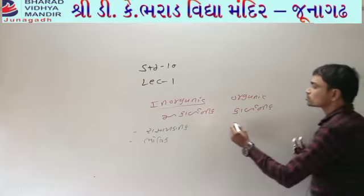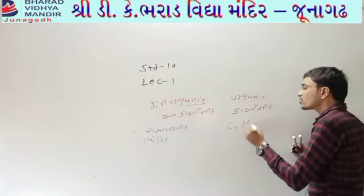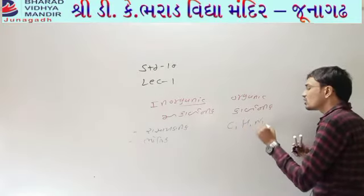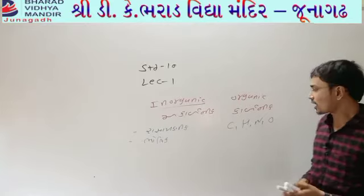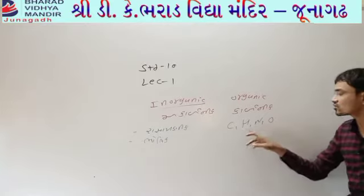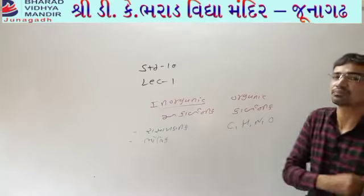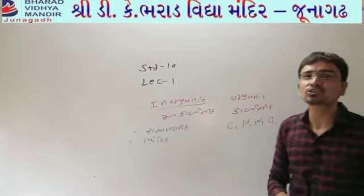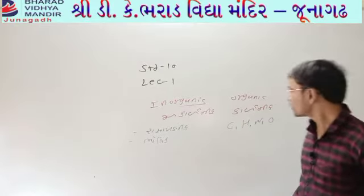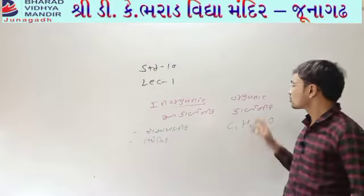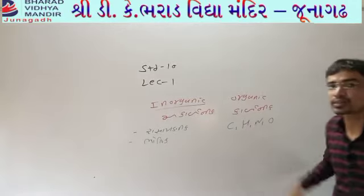Our phosphorus is carbon, hydrogen, and oxygen. We have our phosphorus: carbon, hydrogen, and oxygen. And they put the two out, and then after the sugar — carbonic, carbonic, organic, organic.